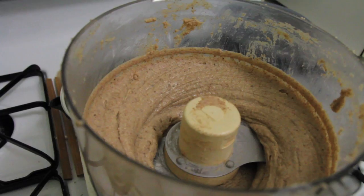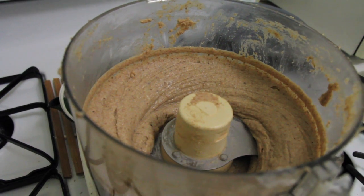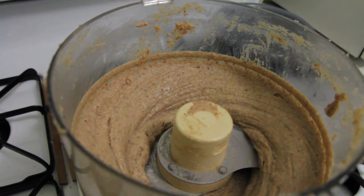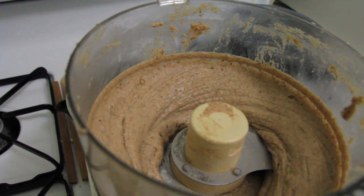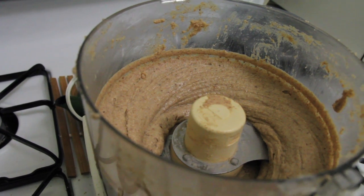Around 30 minutes your almonds will turn nice and smooth and you'll be finished. The process may vary according to your food processor brand and capacity so it may be less for you.